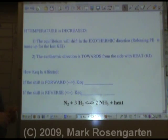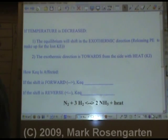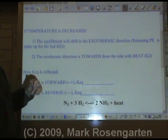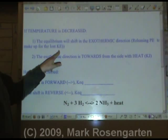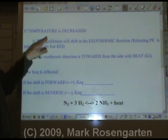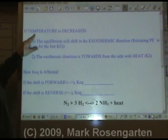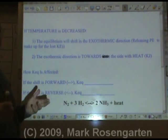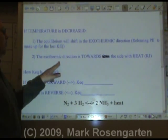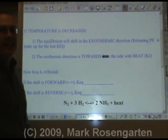If the temperature is decreased, the equilibrium will shift in the exothermic direction. This will release potential energy to create more kinetic energy, to make up for the kinetic energy you removed — because remember, temperature is a measure of kinetic energy. The exothermic direction is towards the side that has heat on it.